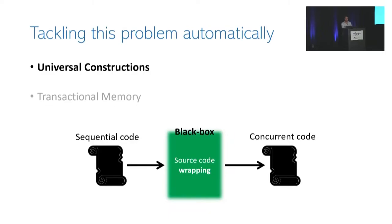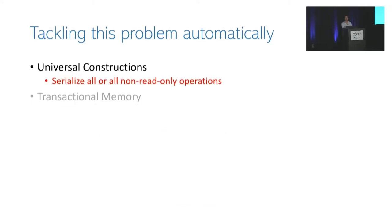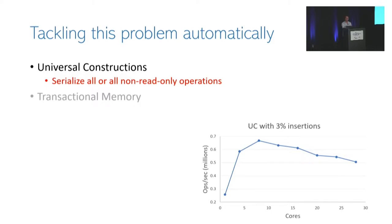At the end of an operation, the code tries to commit the changes by making the local copy become global. However, universal construction systems suffer from a significant drawback: they cause serialization of operations. Even in the most scalable systems where only non-read-only operations are serialized, when executing combinations of lookups and updates, there is significant degradation in scalability. A graph shows that even 3% of insertions degrade the scalability dramatically.